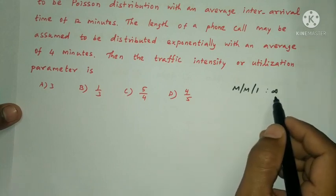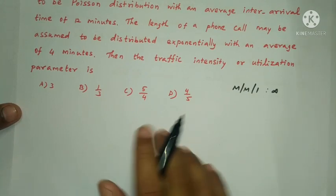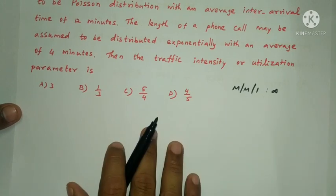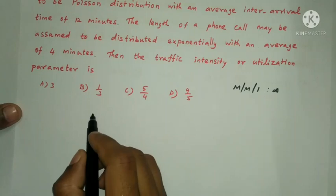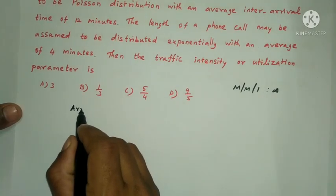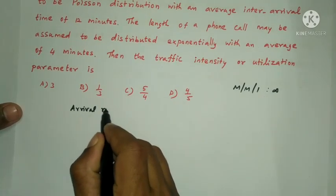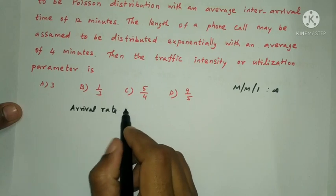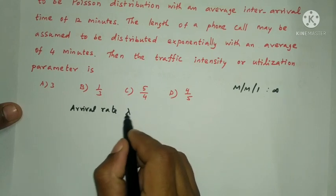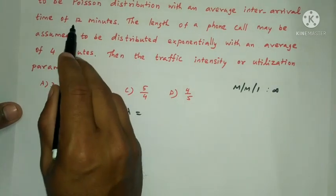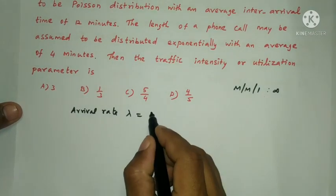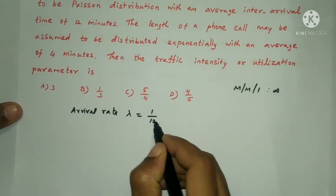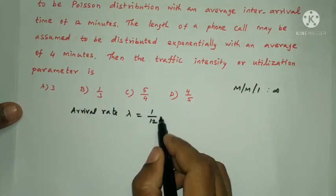This is a first-come, first-served model. The arrival rate lambda = 1/12 (since inter-arrival time is 12 minutes).